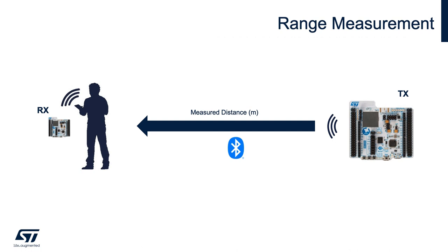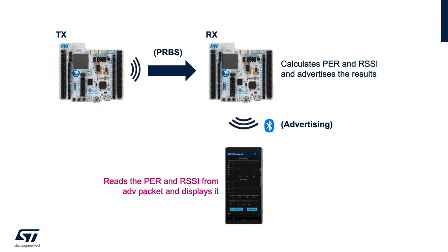But for practical purposes, it is important to take the range measurement in the same environment that the device being developed is expected to be used in, to make sure it will meet your range requirements. This video gives an overview of a method to measure the range performance of the STM32WB BLE radio using two Nucleo WB55RG boards in DTM mode and a custom Android app which displays RSSI and packet error rate in real-time.